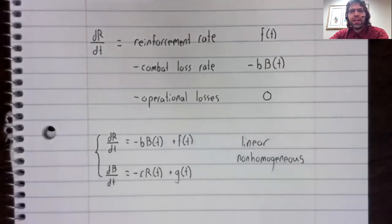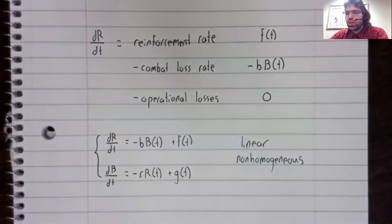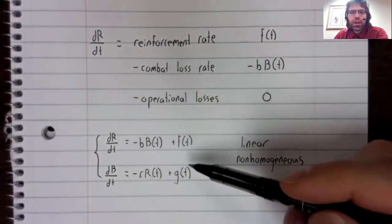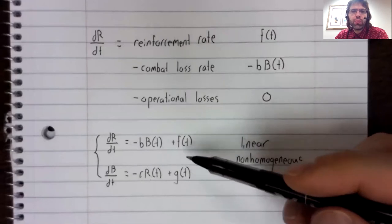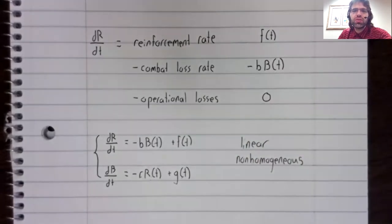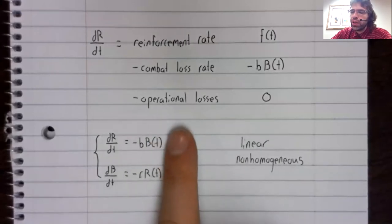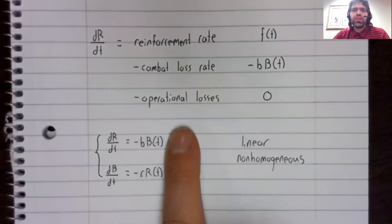When we analyze the system, we'll look at the cases where there are no reinforcements. Where the reinforcement rates are zero. And that will give us a very straightforward linear homogeneous system.